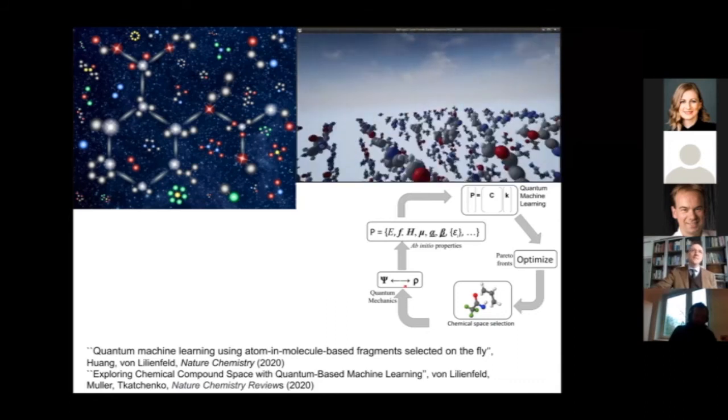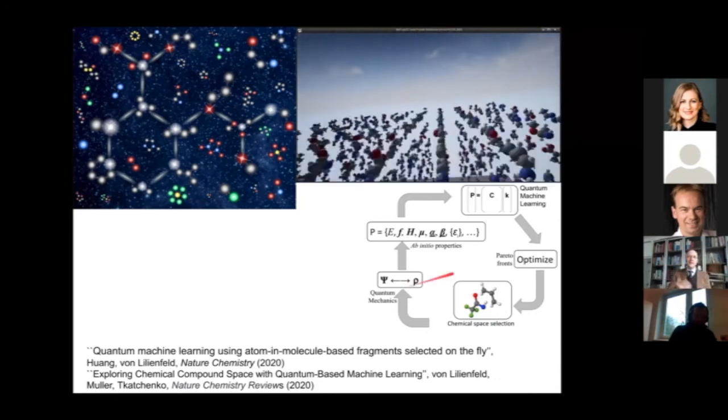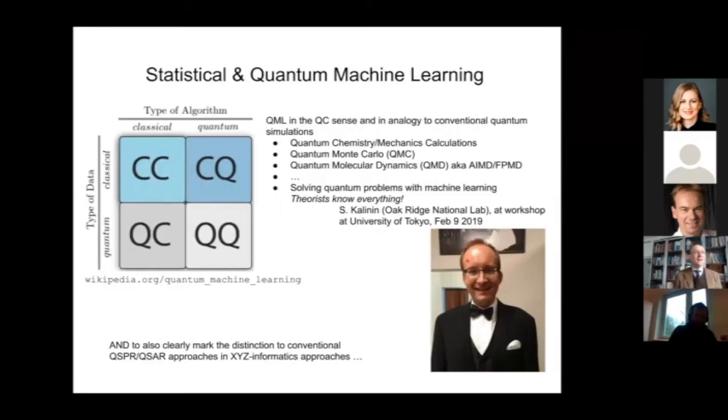You would start with a library of initial compounds, solve some quantum mechanics, get properties, train a machine on this, and then use the machine to explore vast spaces very rapidly and identify new candidates for an updated library. Then solve for them the quantum mechanics and cycle this loop. If you cycle sufficiently long, you should converge to some nice optimal materials. We like to call this quantum machine learning.